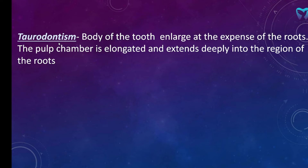The word taurodontism originates from the Latin word 'taurus' which means bull, and the Greek word 'odontos' which means tooth — so 'bull tooth.' These cud-chewing animals, or ruminants, have the same type of tooth. Cud-chewing means they eat food, store it in the stomach, then bring the food back to the mouth and chew it again. Bulls, goats, and sheep all have this mechanism of eating food.